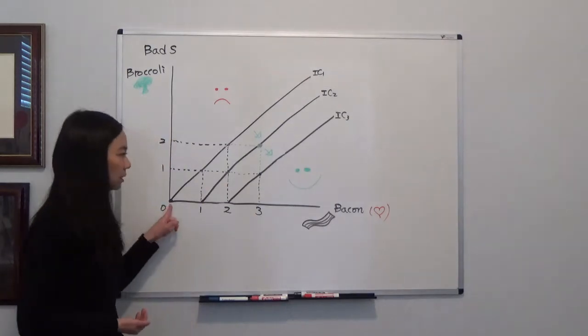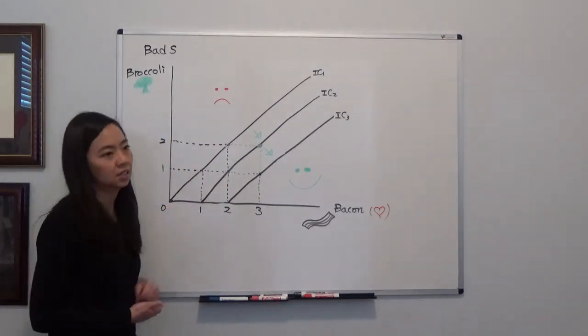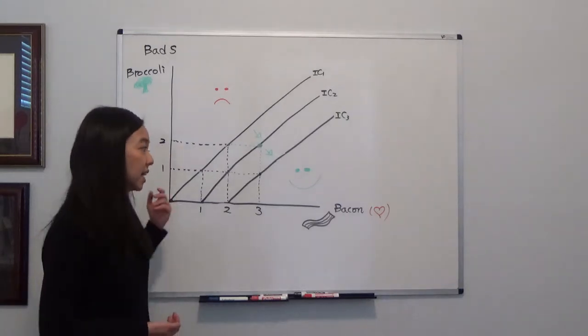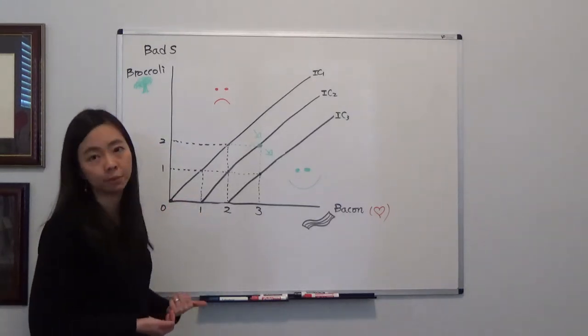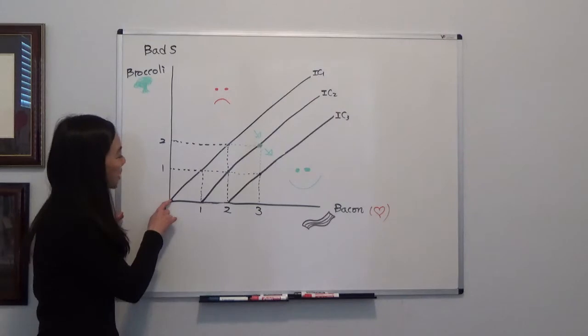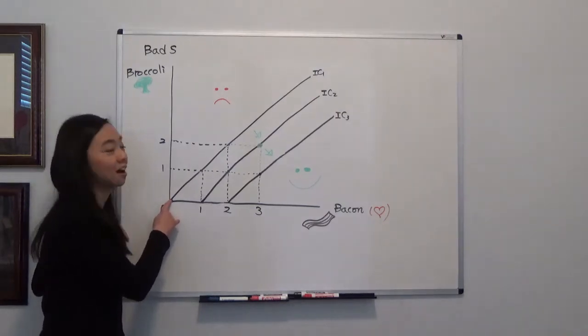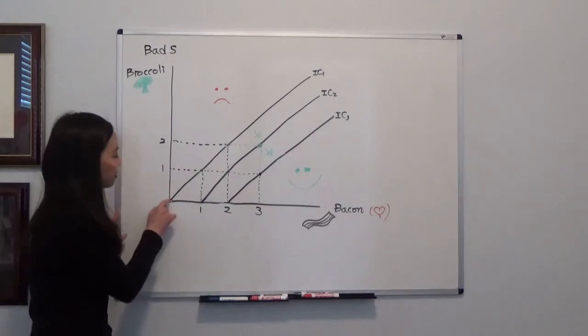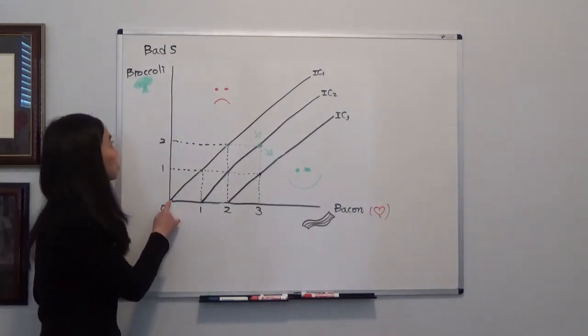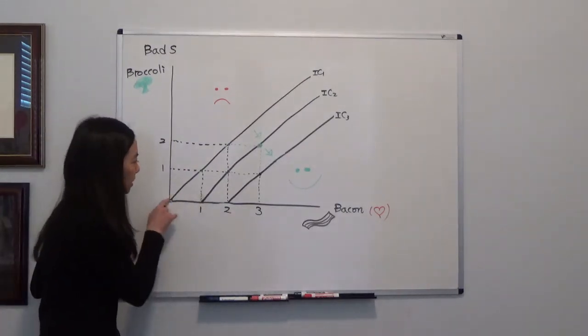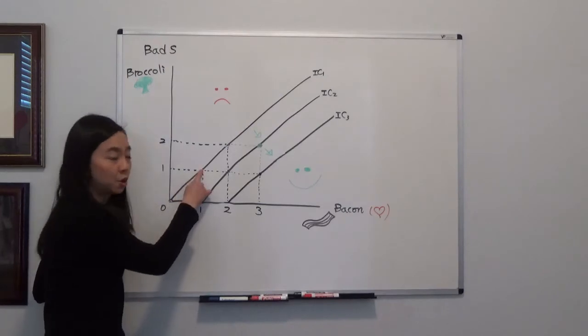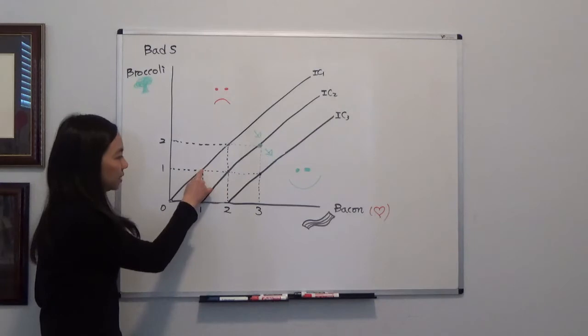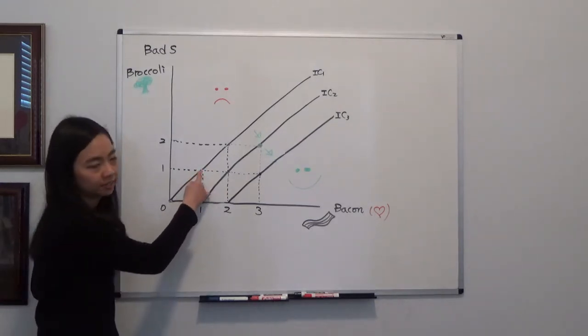And Jason's like, okay, even though I hate broccoli, I want bacon and that's the only way I can get it, so I'm going to eat my broccoli. You make sure that Jason is moving on the same indifference curve, which we call IC1. We're moving from 0,0 - no broccoli and no bacon - to 1,1. Notice that you're on the same indifference curve because you hate broccoli but you love bacon - I mean, for Jason.